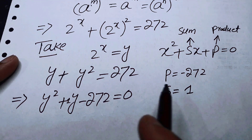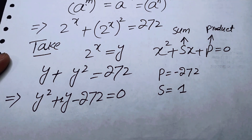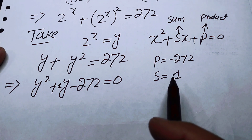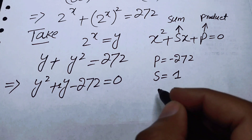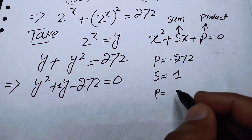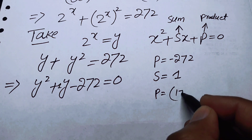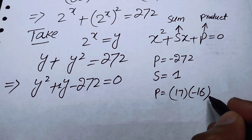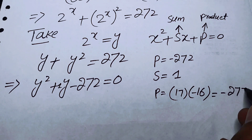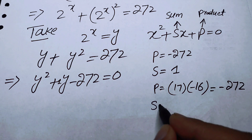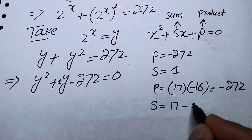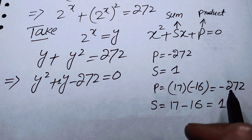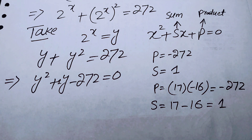We need two numbers whose product is minus 272 and whose sum is plus 1. Those two numbers are 17 and minus 16: multiplying 17 by minus 16 gives minus 272, and summing them gives 1. So we have these two numbers with the required product and sum.